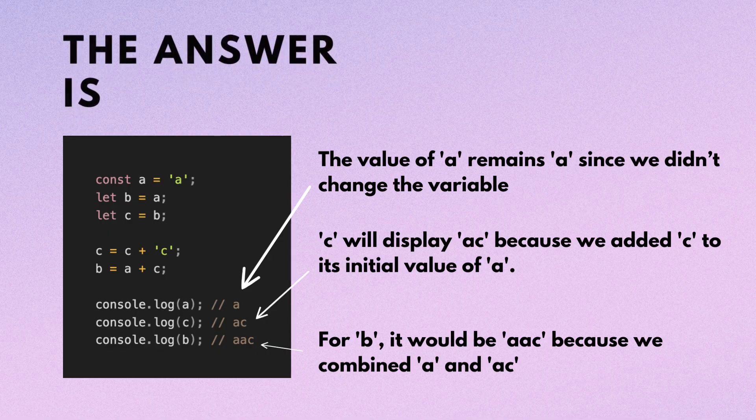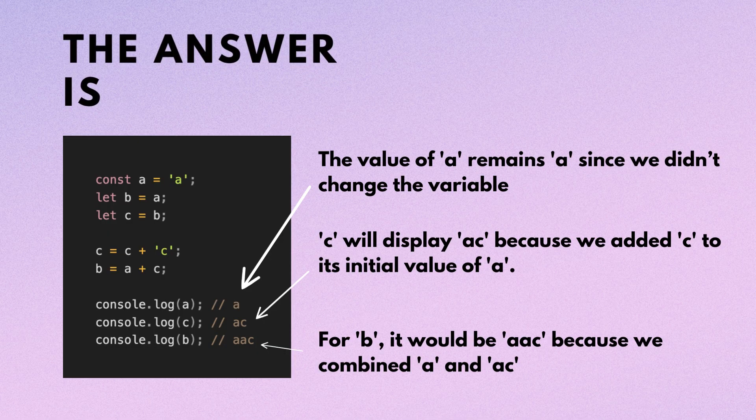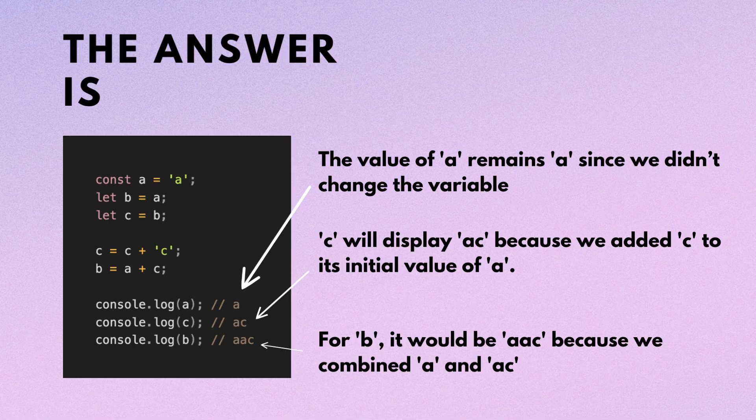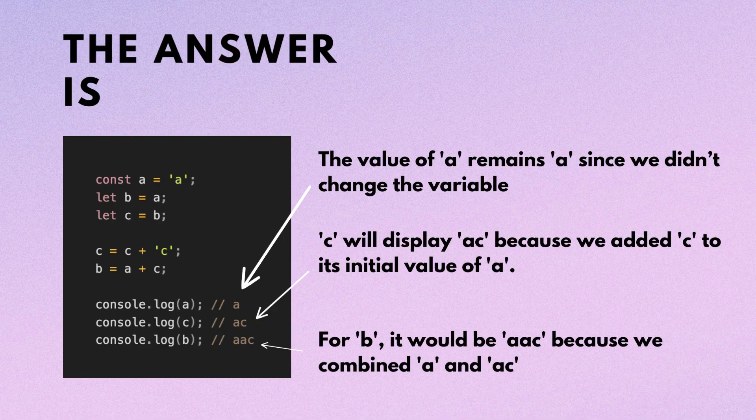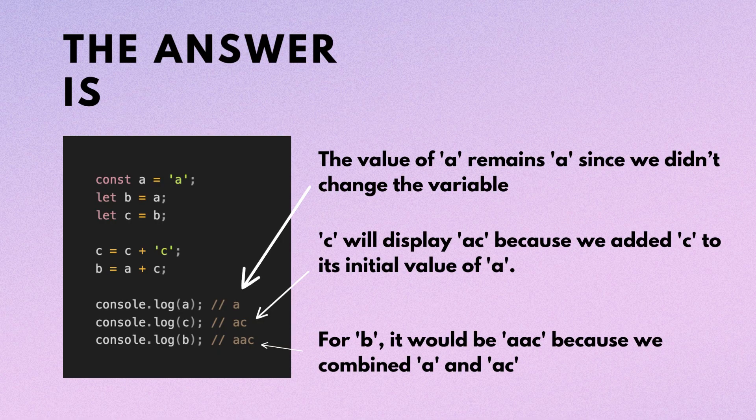The answer is: the value of a remains a since we didn't change the variable. c will display ac because we added c to its initial value of a. For b, it would be a ac because we combined a and ac.